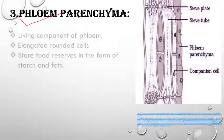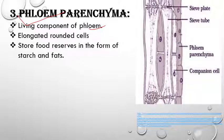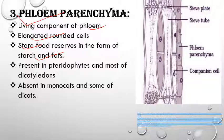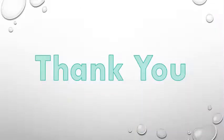Phloem parenchyma is the living component of phloem consisting of elongated cells. Its main function is storage of food reserves in the form of starch and fat. It is present in pteridophytes and most dicotyledons, but absent in monocots and some dicots. The fourth component, phloem fibers (also called bast fibers), was discussed in the last lecture. That concludes today's lecture, thank you.